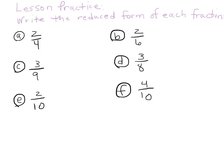In lesson practice, write the reduced form of each fraction. First, I'm going to figure out what number two and four have in common — the greatest common factor. Two is as high as I can go, and two does go into four. So I'm going to divide by two over two, which is like the giant one. Two goes into two once, two goes into four twice. Also notice that two is exactly one-half of four, so even without extra division I know the answer is one-half.